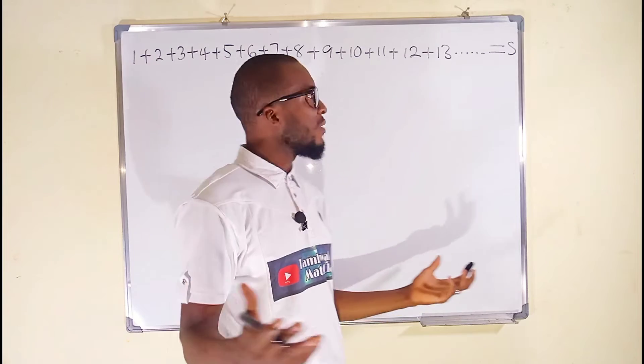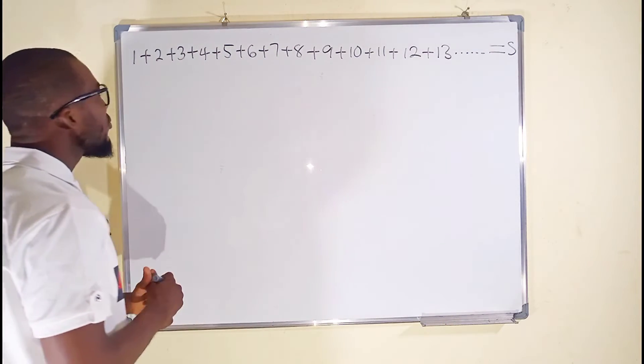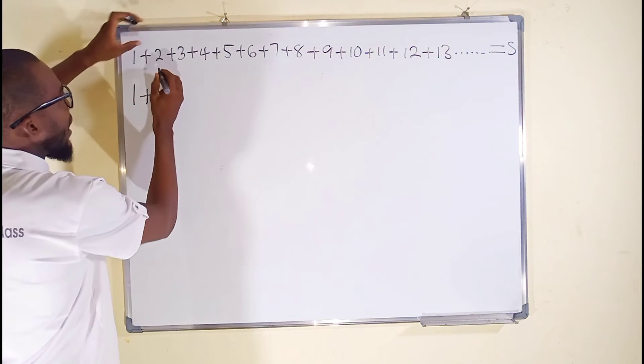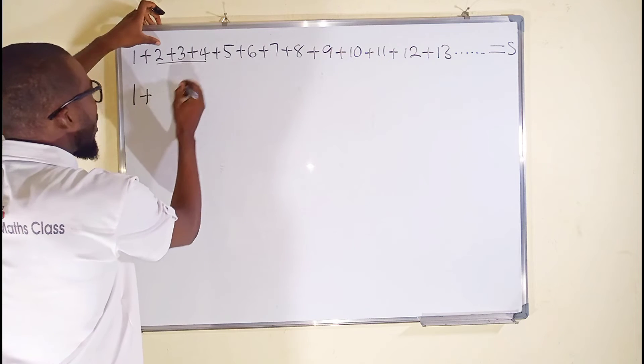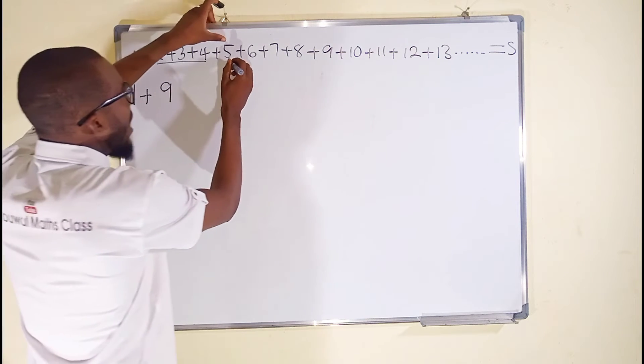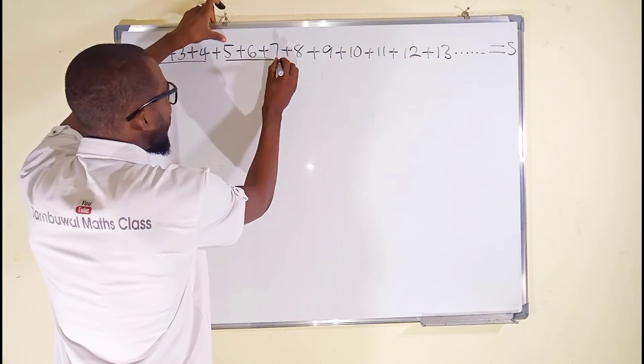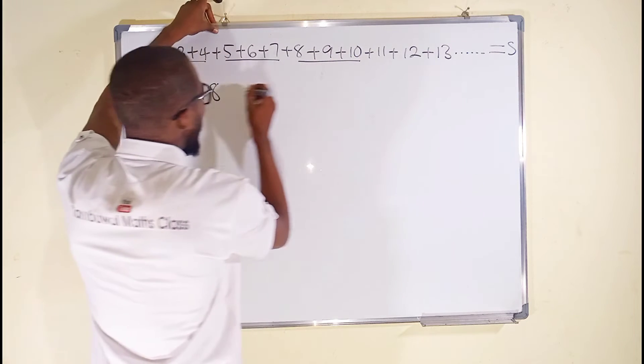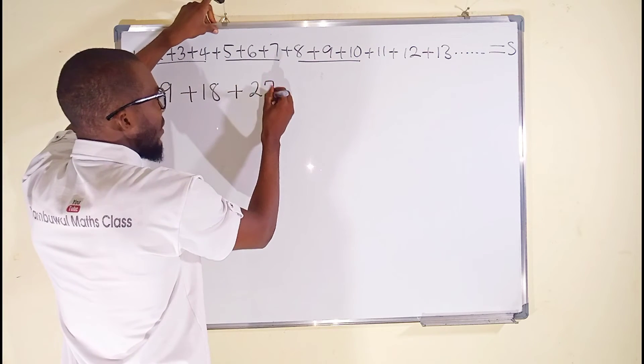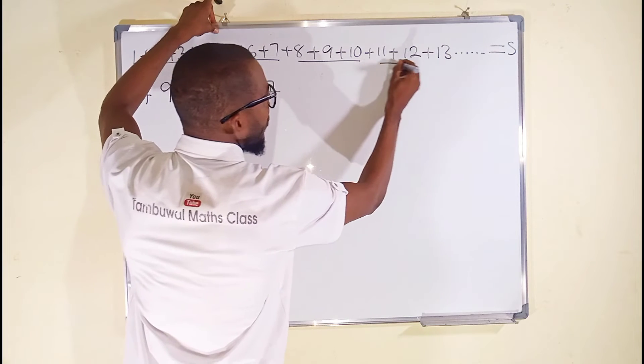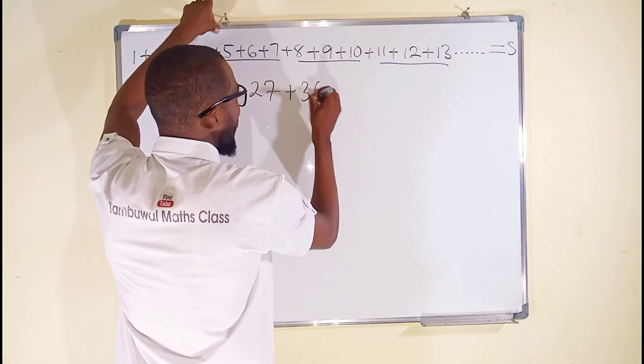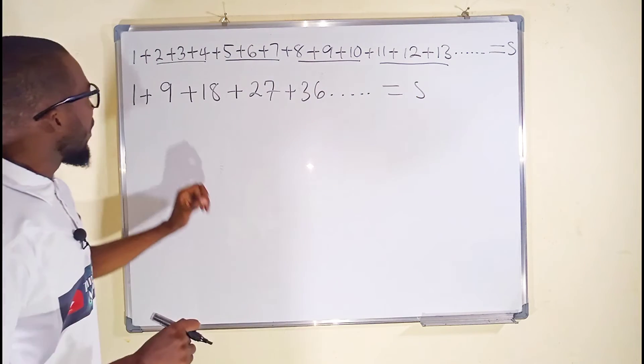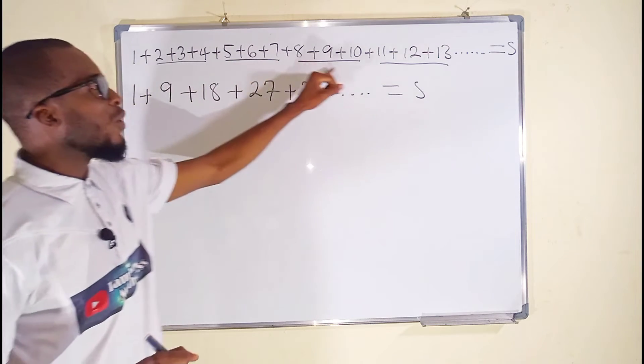But I come to realize one pattern here. If I take 1 plus and I add the next 3 numbers, I'm getting 9. Add the next 3 numbers, you're getting 18. Add the next 3 numbers, you're getting 27. Add the next 3 numbers, you're getting 36. And that order. All this equals S. Look at one pattern here. Have you realized that all these are multiples of 9?